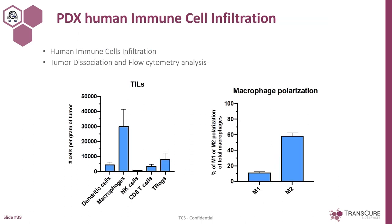Those PDX are also infiltrated with human immune cells, and as described for CDX, the profile of infiltration really depends on the PDX. The data we have really show that the TIL profile is mimicking what was the original situation in the patient. So we are really one step closer to the clinic working with PDX in the context of humanized mice. As an example, one PDX has a lot of macrophages — we have studied the M1 and M2 macrophages balance — but little T cells. Once again illustrating that you can have different situations in terms of infiltration, and knowing your model well is really the key to success in your experiment.